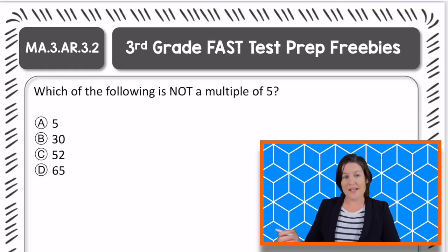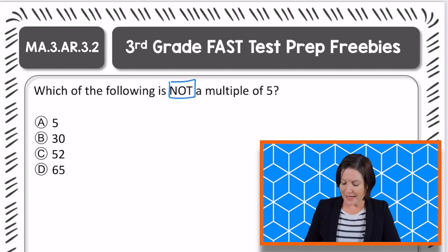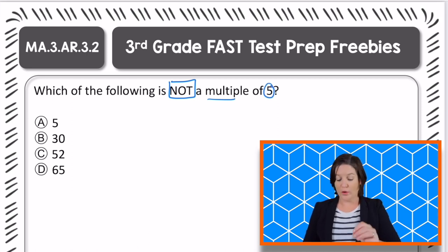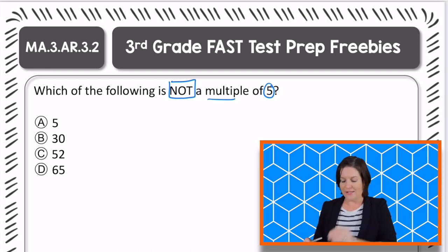So this question is a multiple choice question, and it says, which of the following is not a multiple of five? So we're going to have three that are multiples of five and only one that is not. So we got to be careful. I like to box that word not just to make sure my eyes focus in on that.